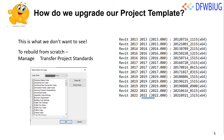To rebuild from scratch, open a clean vanilla file and go to Manage > Transfer Project Standards. This lets you copy view templates, fill patterns, text styles, dimension styles, view types, and browser organization into your new file. Then create the views, associate them with correct view templates, create sheets, mark them up, and test, test, test.